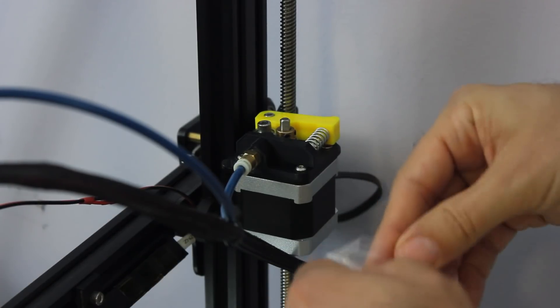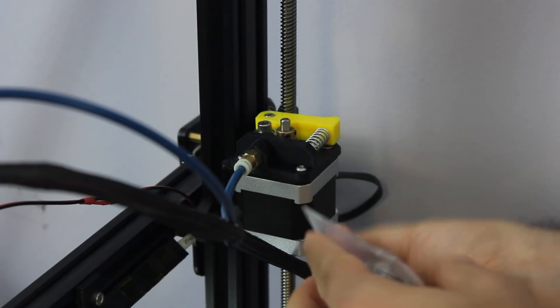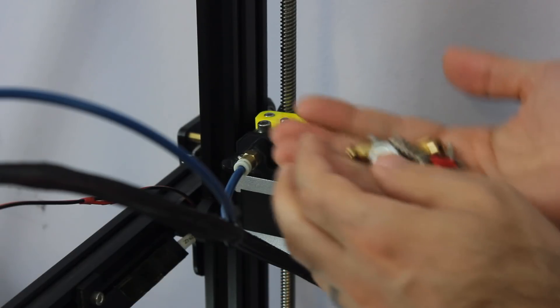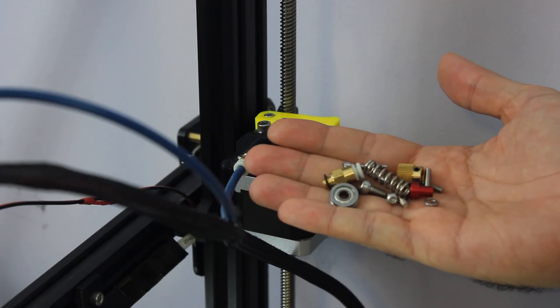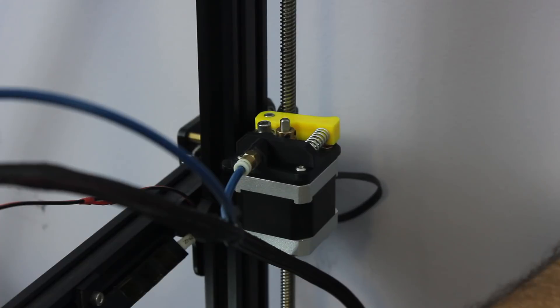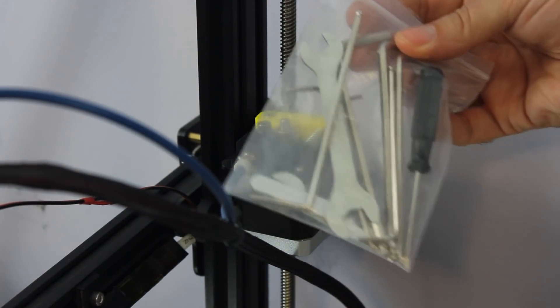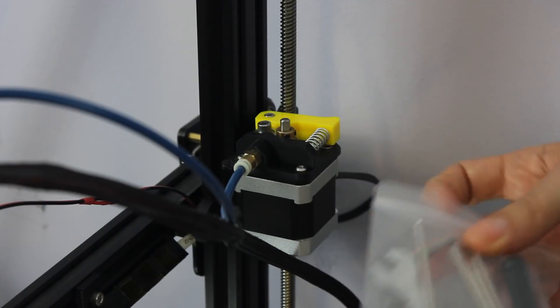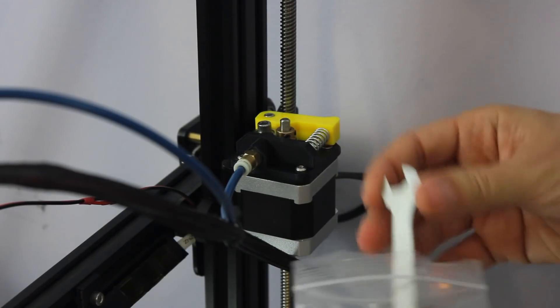And then in the bag, you just have all of the different pieces for the upgrade. And to do this, all I'm going to use is the little bag of tools that came with the printer, and that's all we need. So we're going to go ahead and get started.